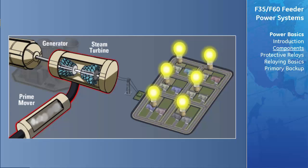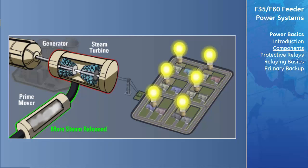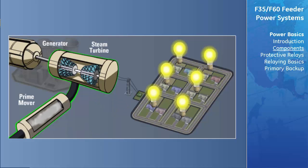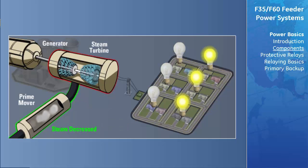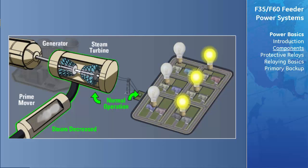The generator's control system will sense this and input more mechanical energy to match the increased load. If the demand decreases, the generator will speed up, and the control system senses this and takes appropriate action to reduce the mechanical energy input into the system.